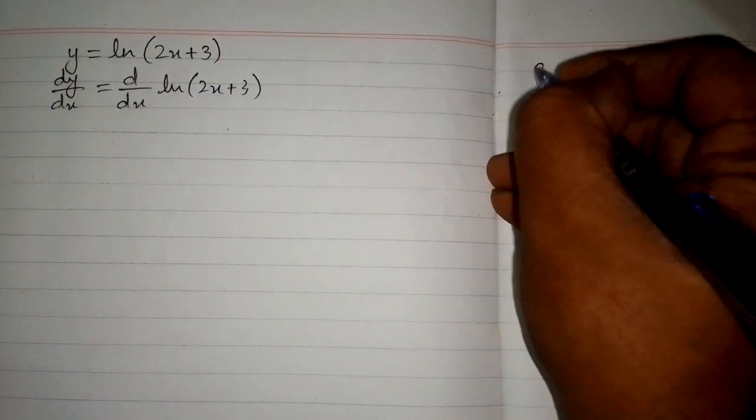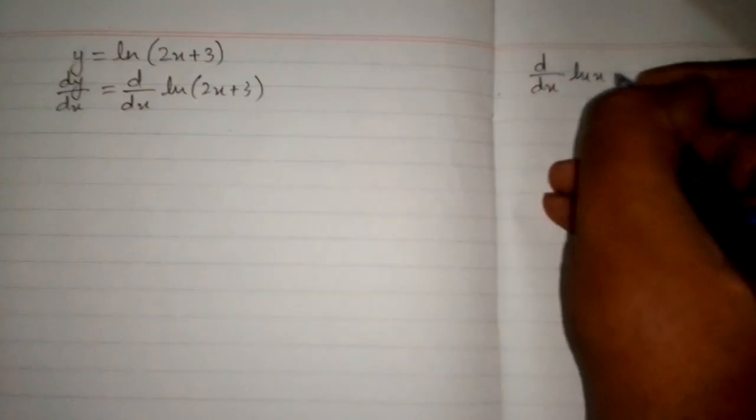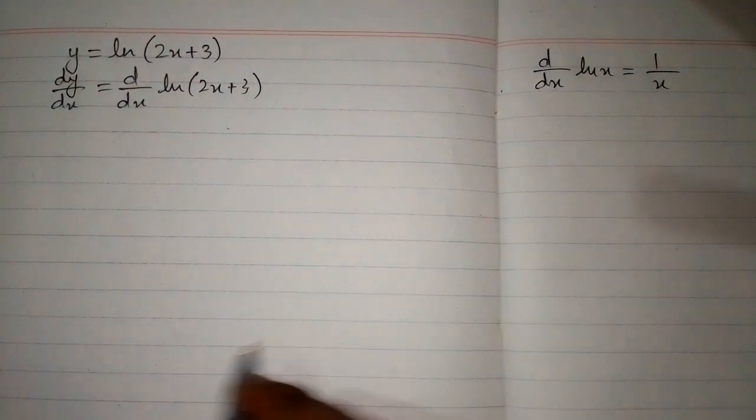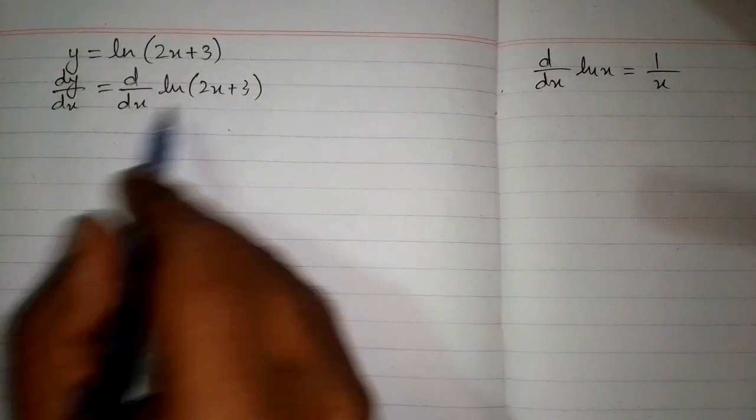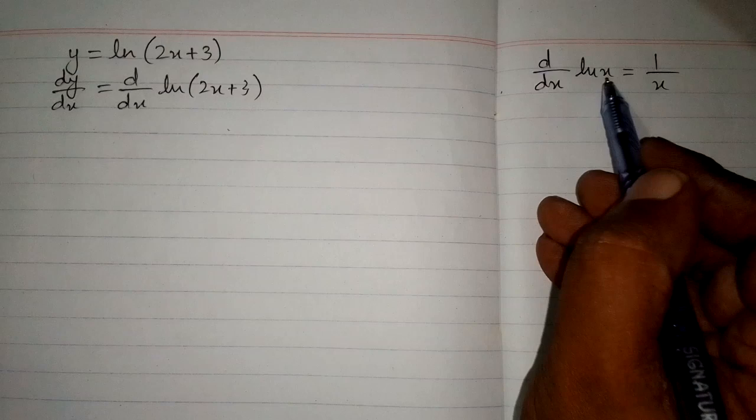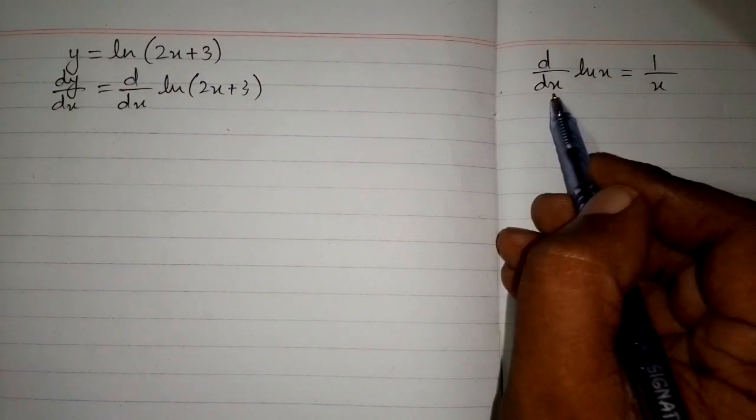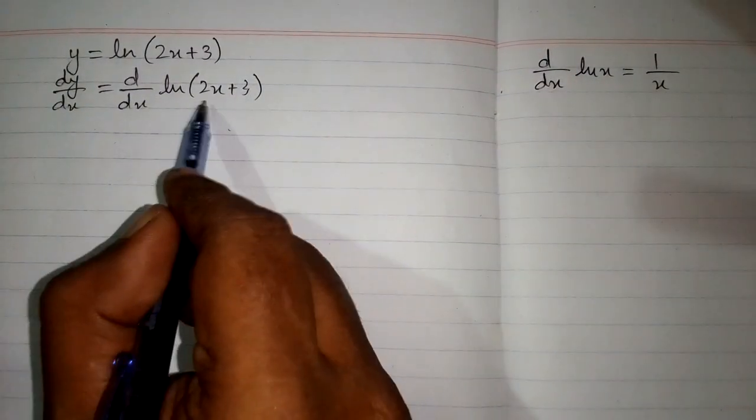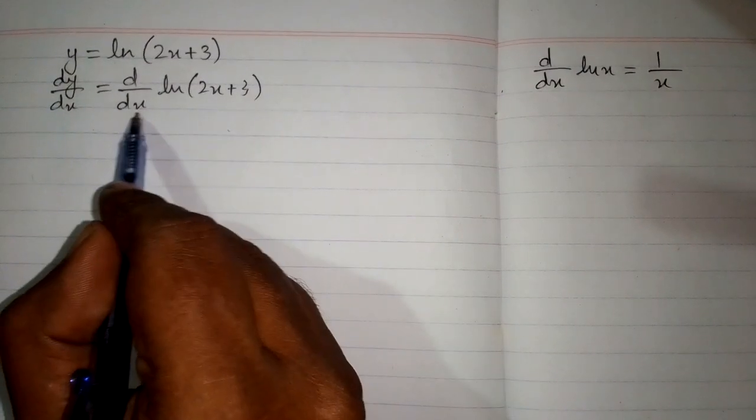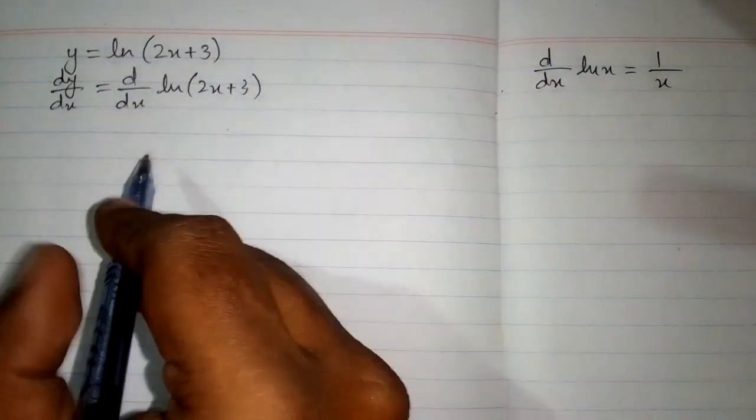Now we know that the derivative of ln of x is 1 upon x. We can apply this formula here, but we can see that we have this variable and this variable must be same. This thing and this thing must be same in order to apply this formula.